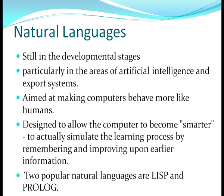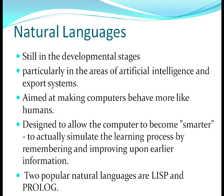Having talked about fourth generation languages, we move on to natural languages — the fifth generation languages. They are still in developmental stages but our future lies in these languages. They are being explored particularly in the areas of artificial intelligence and expert systems, aimed at making computers behave more like humans — simulating the learning process by remembering and improving upon earlier information and taking decisions. Robotics is a step in this direction, and popular natural languages are Lisp and Prolog.